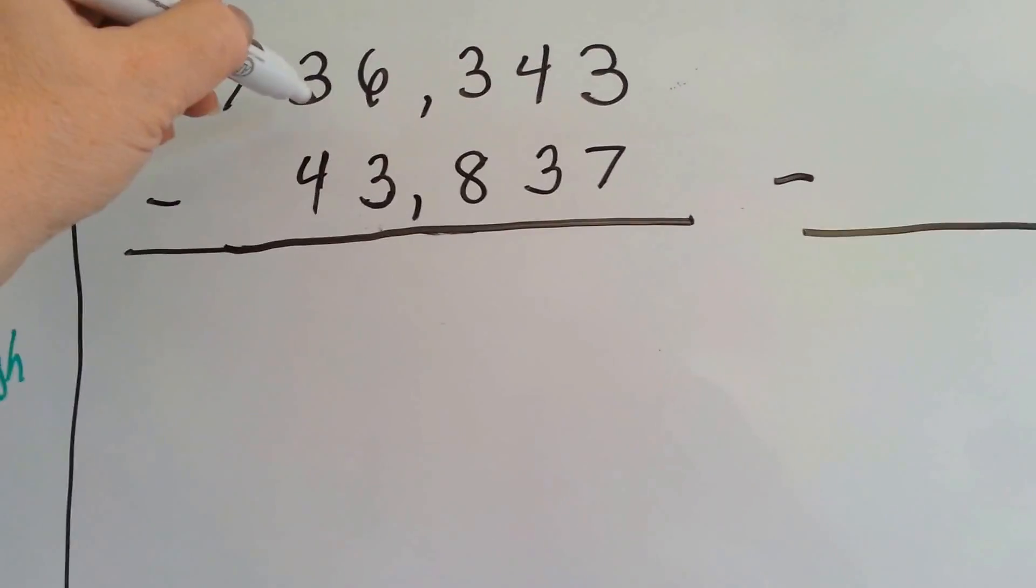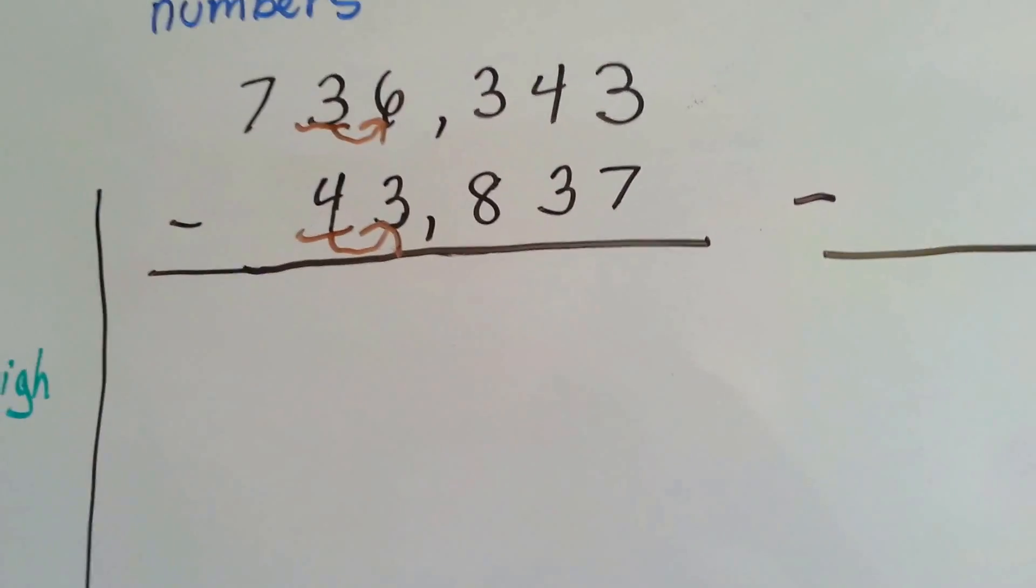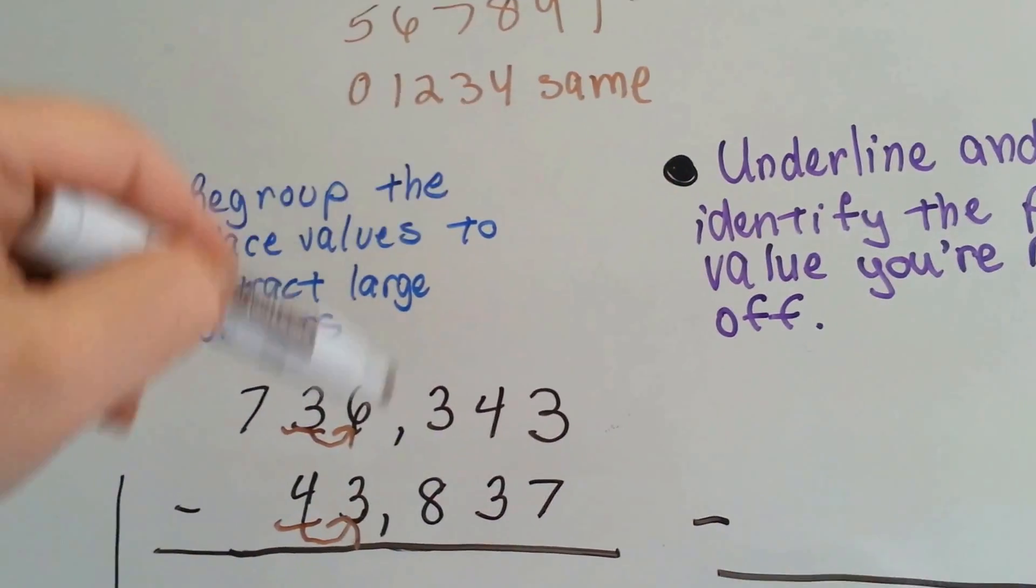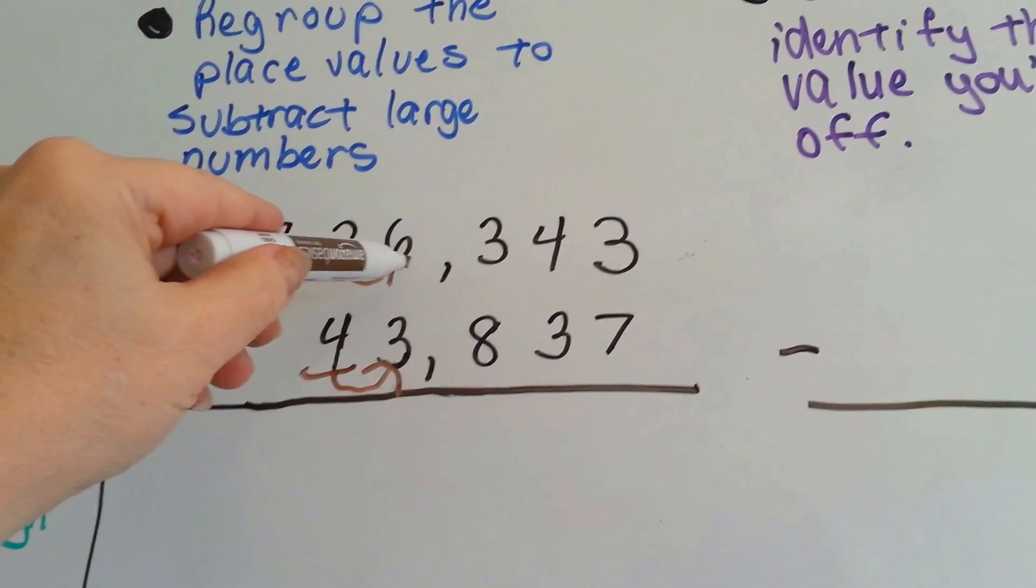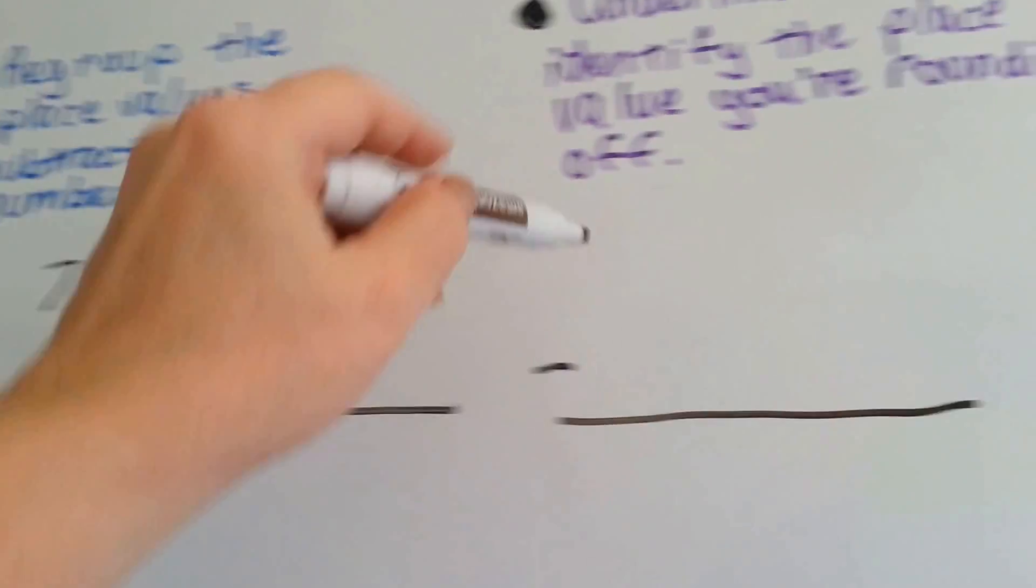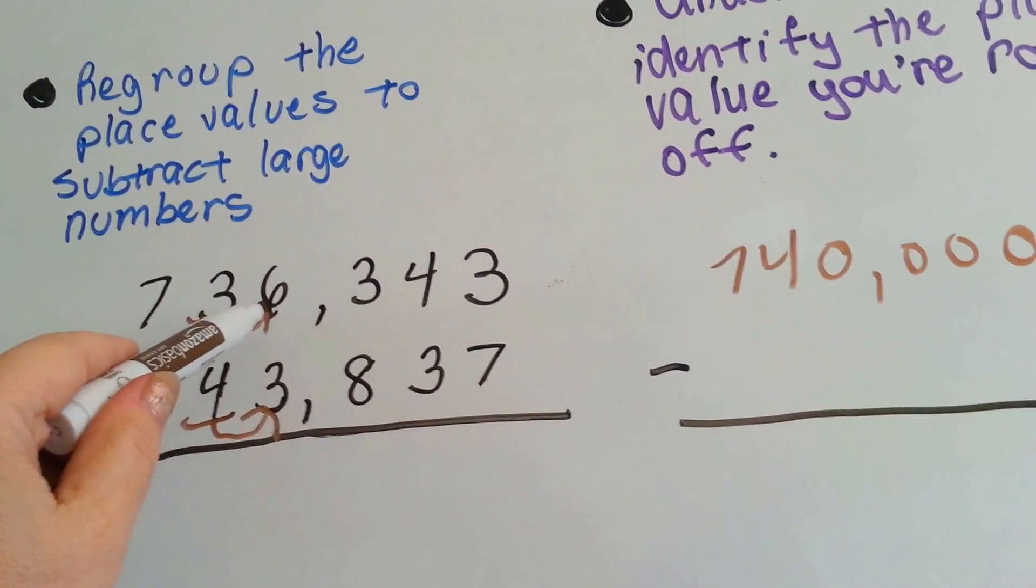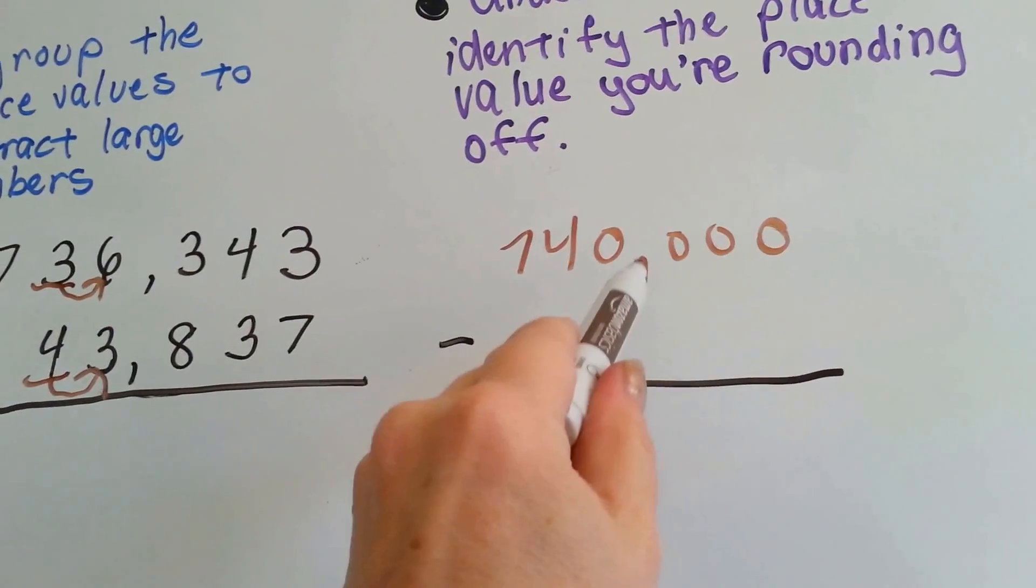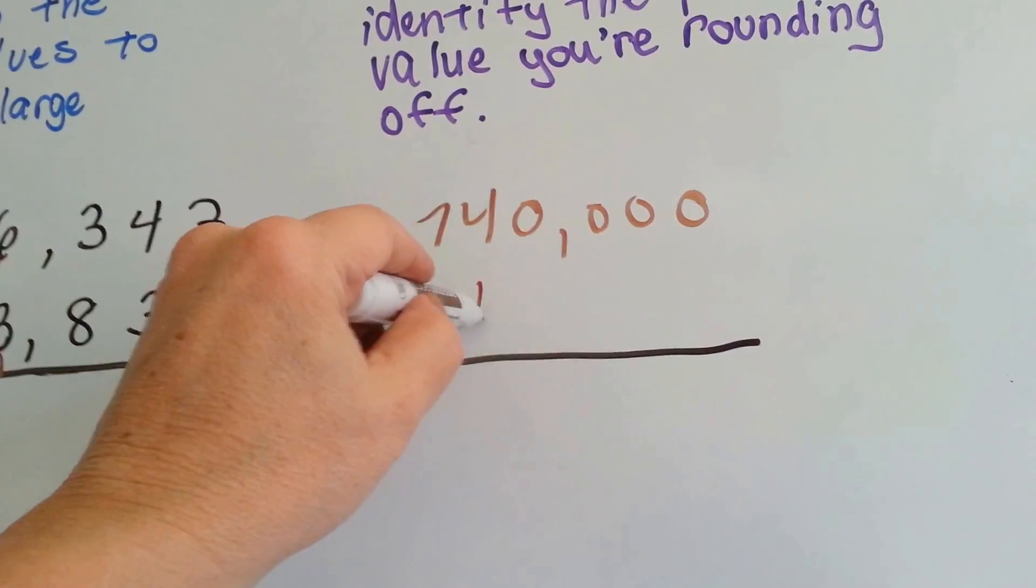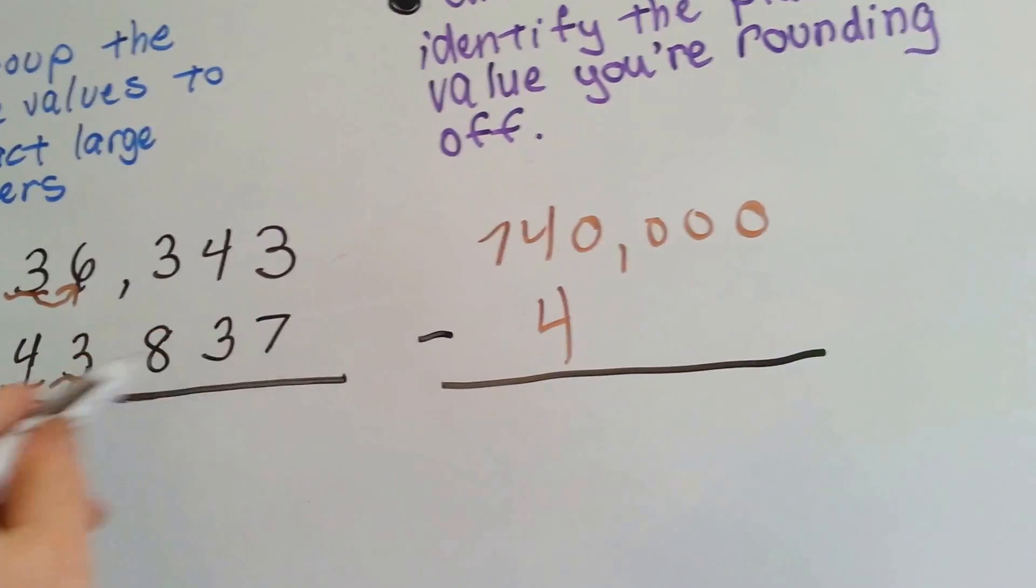So, we're going to round off to the 10,000s, which means this number to its right is going to be the one telling it what to do. So, remember, 5, 6, 7, 8, 9 says to go up. 0, 1, 2, 3, 4 says to stay the same. The 6 tells the 3 to go up to a 4. So, now we have 740,000 because the 6 finished its job and turned into 0, so we have four 0s. See? We'll put a comma there. So, the 3 is telling the 4 to stay the same. And now it's done with its job. It and the other three place values become 0, so you have four 0s again.